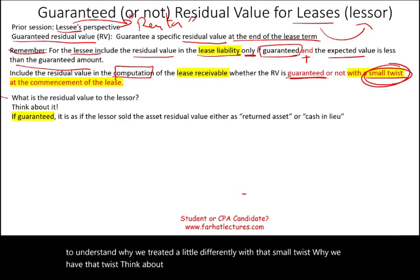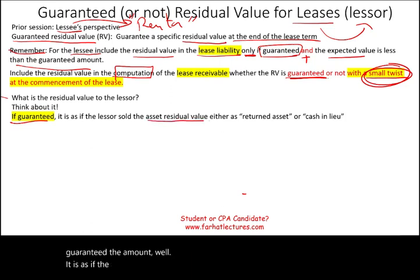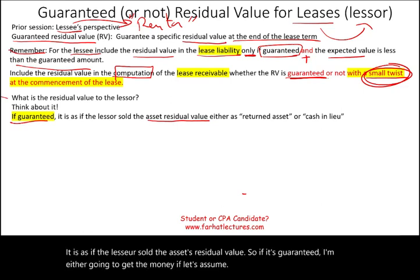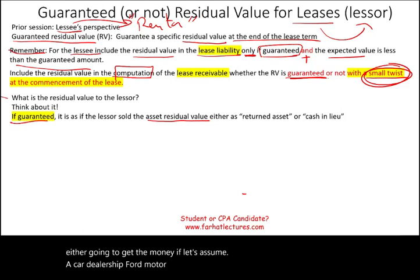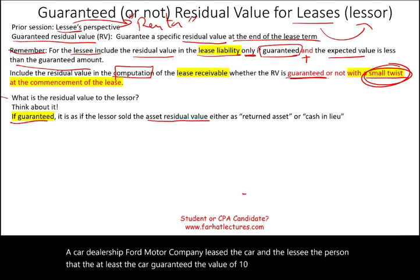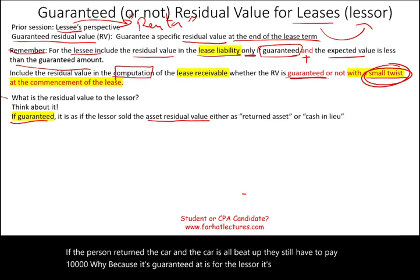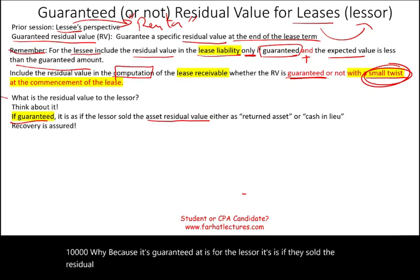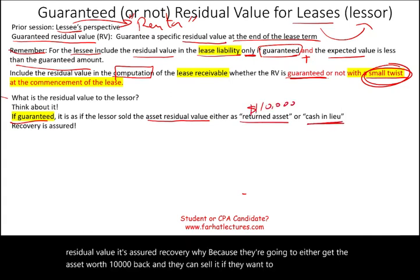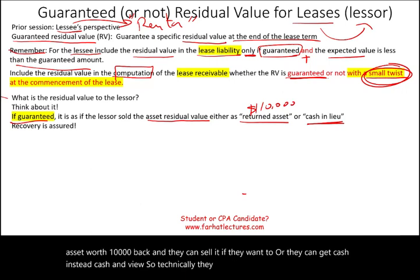Think about this concept. If the amount is guaranteed, it is as if the lessor sold the residual value of the asset. For example, if Ford Motor Company leased a car and the lessee guaranteed the value at $10,000, even if the car comes back beat up, the lessee still has to pay $10,000. The lessor will either get the asset worth $10,000 back or cash in lieu — so the recovery is assured. Technically, they sold the residual value.